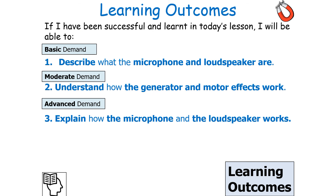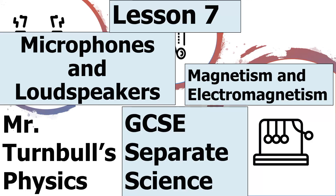So if we've been successful in today's lesson, we should be able to describe what the microphone and the loudspeaker are, understand how the generator and motor effects both work, and explain how the microphone and the loudspeaker work. I hope you've enjoyed today's lesson on microphones and loudspeakers, part of the magnetism and electromagnetism topic in GCSE Separate Science Physics. Thank you very much for watching and have a lovely day.